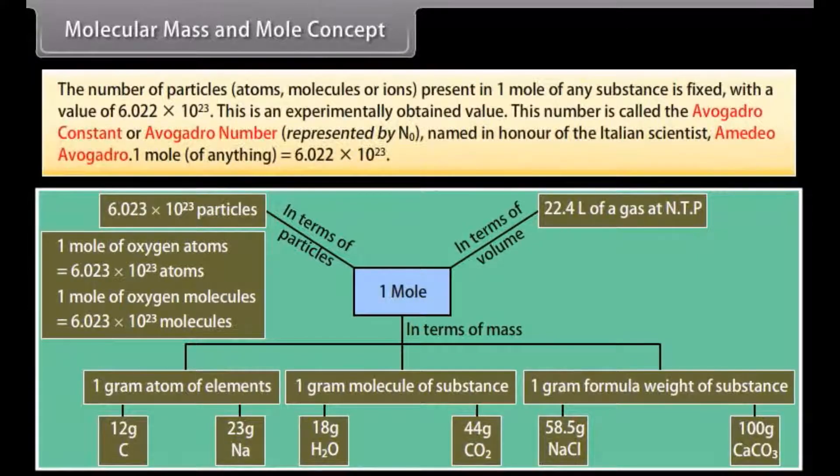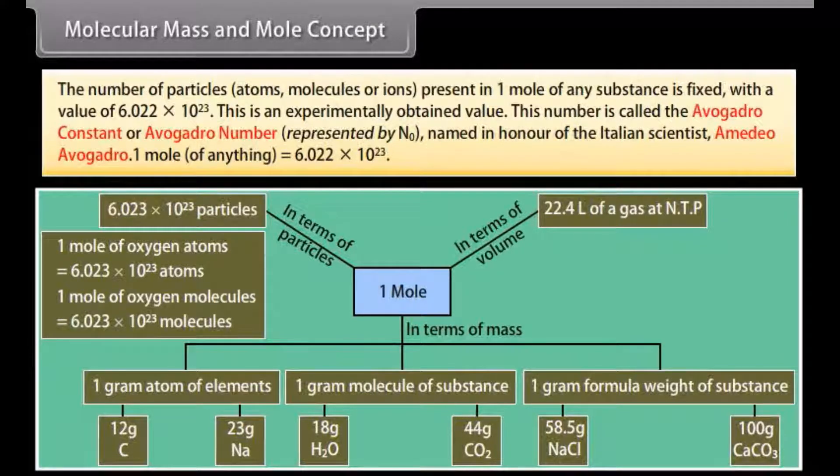The number of particles - atoms, molecules or ions - present in one mole of any substance is fixed with a value of 6.022 times 10 raised to the power 23. This is an experimentally obtained value. This number is called Avogadro constant or Avogadro number, represented by N0, named in honor of the Italian scientist Amedeo Avogadro. 1 mole of anything is equal to 6.022 times 10 raised to the power 23.